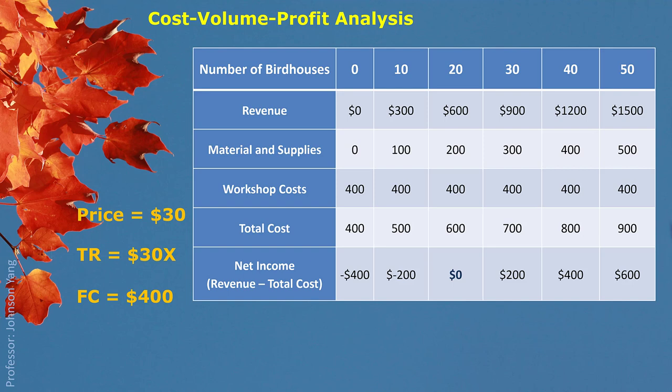We can list the fixed cost of $400. And similarly for material and supply: 100 divided by 10 gives you 10, and 200 divided by 20 gives you 10 as well. So Eric assumes that every birdhouse needs $10 on material and supplies. That is called the variable cost per unit. So we get the total variable cost = 10X, which is $10 multiplied by the quantity of birdhouses.